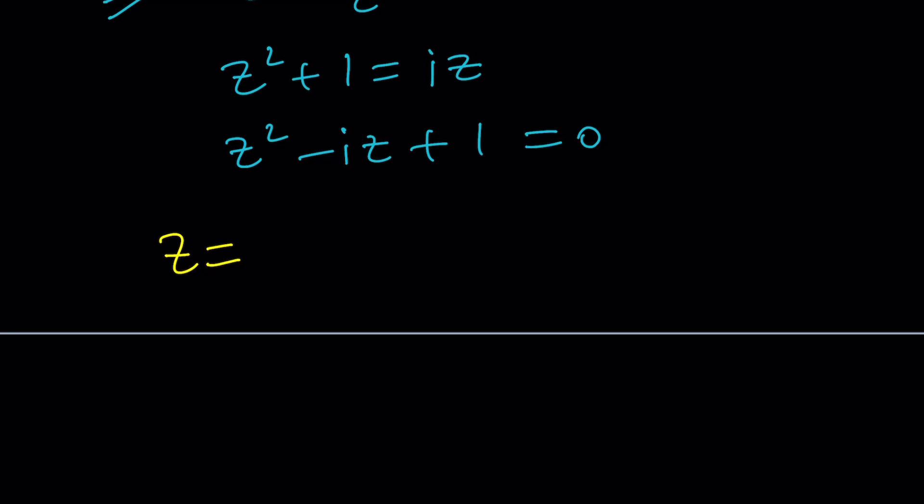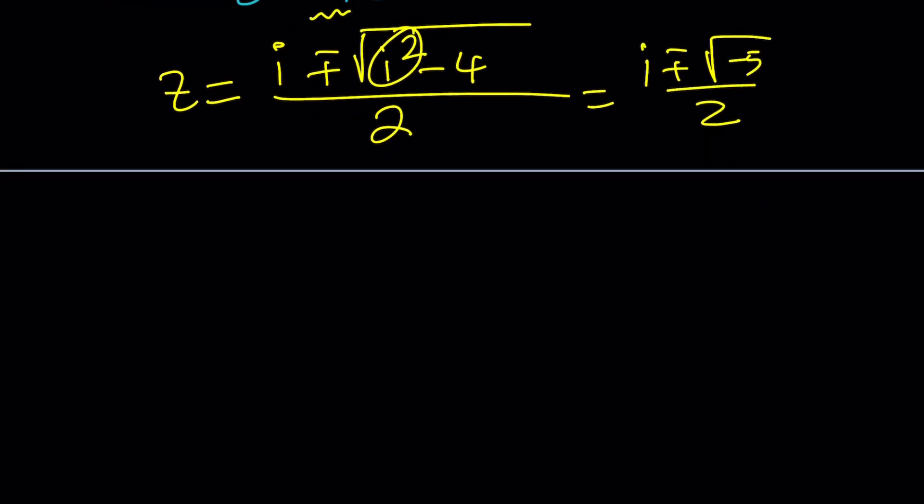Negative B. Notice that B is the coefficient of Z in this case, and that happens to be negative i. So negative B is i plus minus the square root of B² minus 4. i² is negative 1. Negative 1 minus 4 is negative 5. So this becomes i plus minus the square root of negative 5 over 2. But the square root of negative 5 is what? Square root of 5i, right? And the whole thing is divided by 2. Of course, there are two square roots. The plus minus takes care of them.